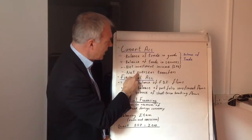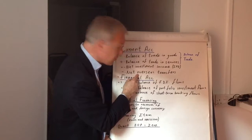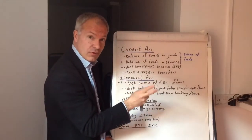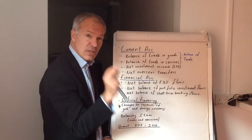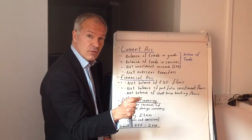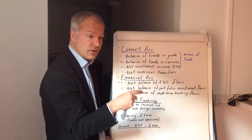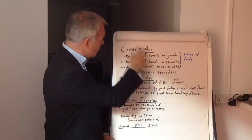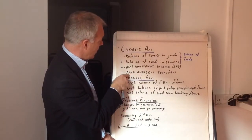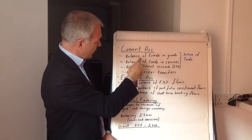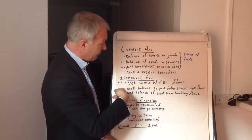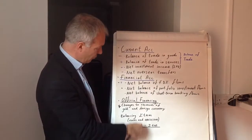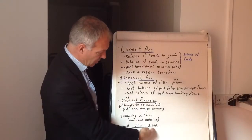Then we've got net overseas transfers, which is usually negative for the UK. It's normally money that we give to the European Union as a net budgetary contributor, and also overseas aid. So this is the current account. The current account needs to be balanced by the financial account — if the current account is negative, the financial account must be positive, so the whole thing becomes zero.